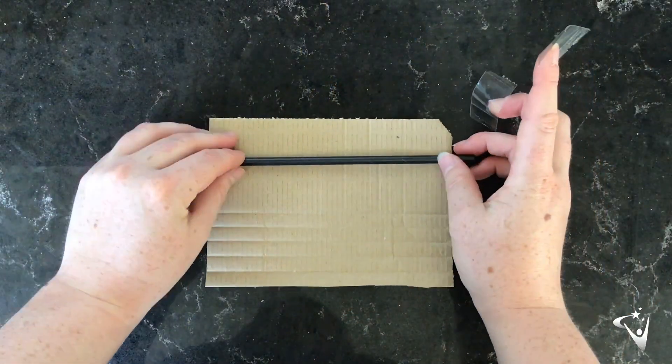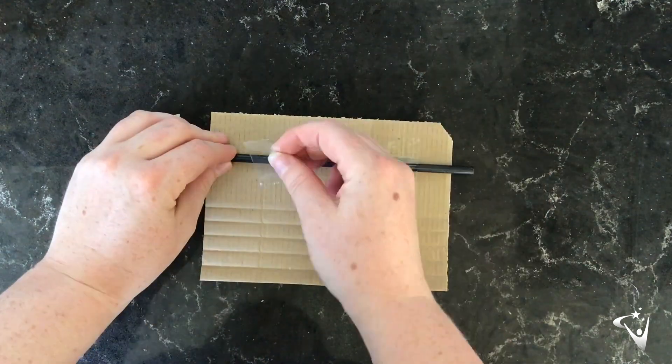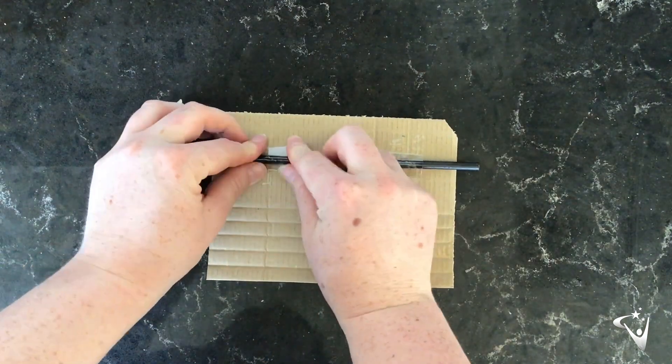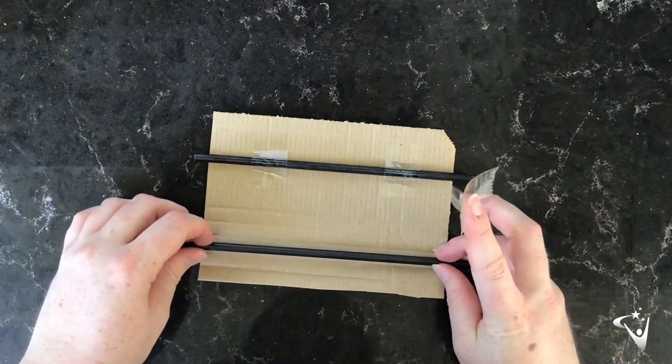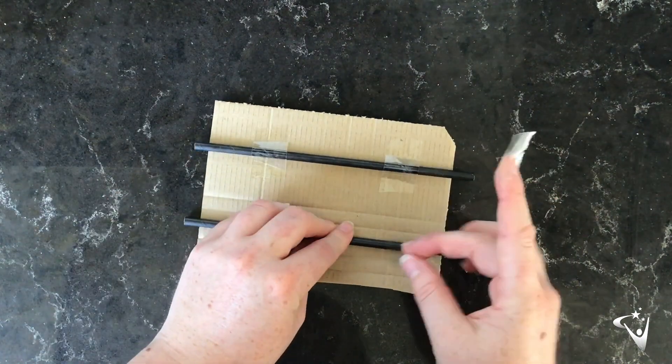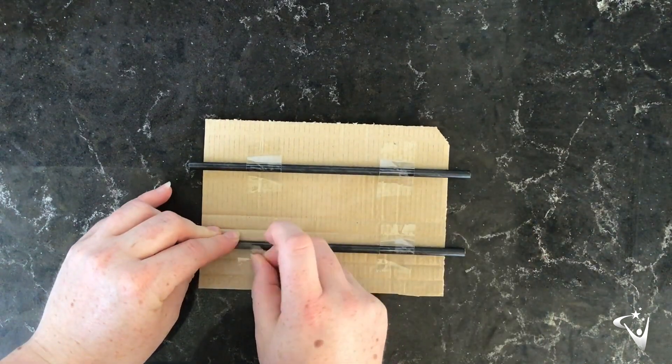First thing we're going to build is the wheel base, so it's really important that your wheels can freely spin. As you can see, I'm sticking some drinking straws down. These are what you're going to stick your axles through. I'm using wooden skewers as my axles, and this means that your wheels will be able to freely turn within the straw and your robot will be able to move.